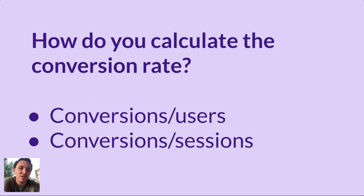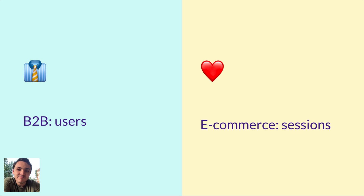If I ask you how you calculate your conversion rate for your business, what will you say? Conversions divided by users, or conversions divided by sessions? Here is my take: users are unique individuals, while conversions and sessions are both events. So comparing apples to apples, I would do conversions divided by sessions — but there is an exception. For B2B businesses, I would calculate conversion rate by users, and for e-commerce, I would use sessions.